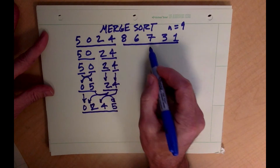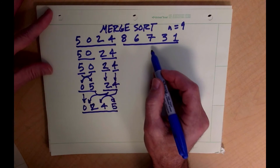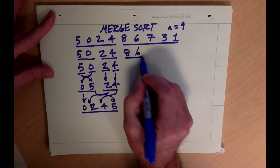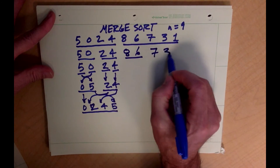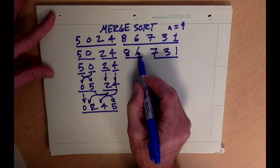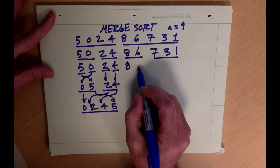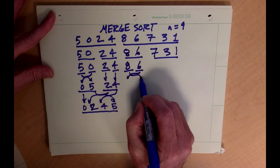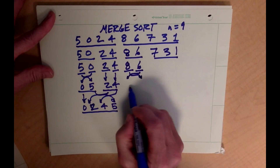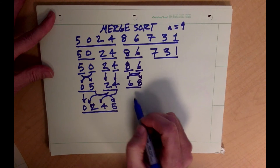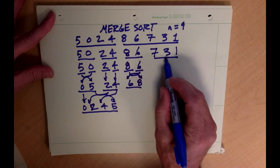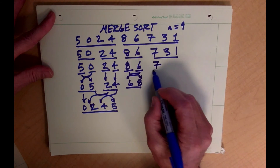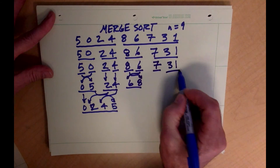Now we're going to use the same process over on this side. Again we'll split this up into two sub-lists: 8 and 6, and 7, 3, and 1. Now we'll work on the left sub-list here and split that up into individual elements. Once those individual elements have been created we can combine those two small lists into a sorted list of two. We'll move over into this list now — I have three elements here so I'm going to split that up into two.